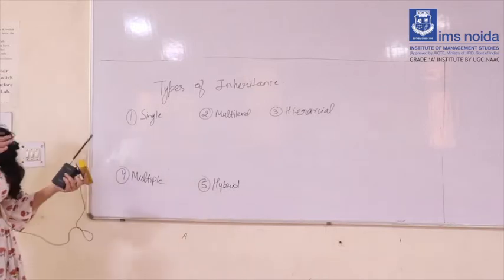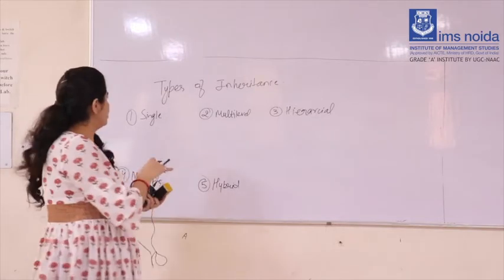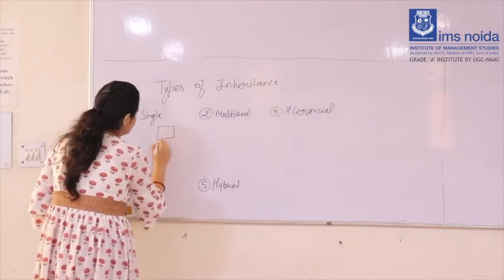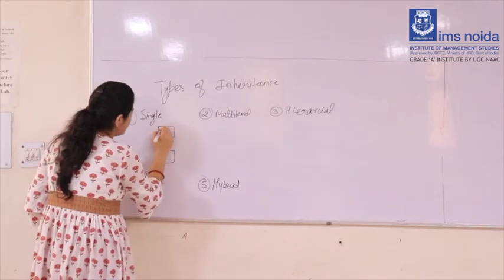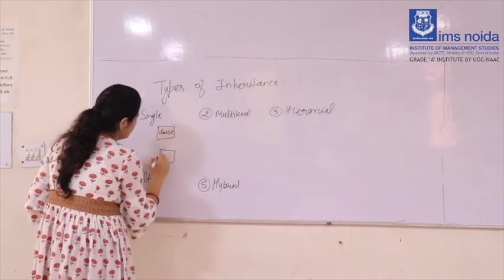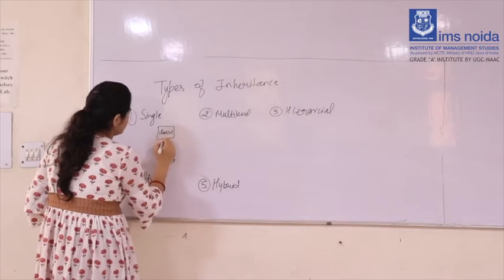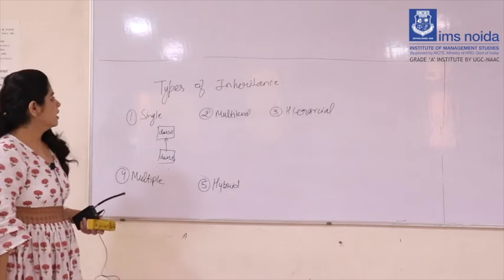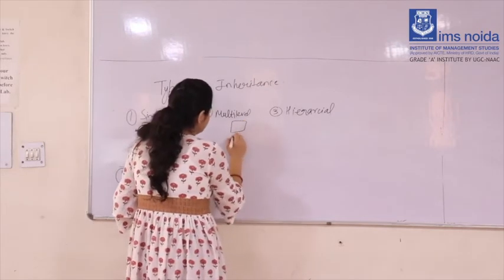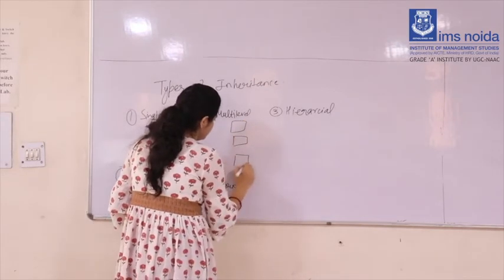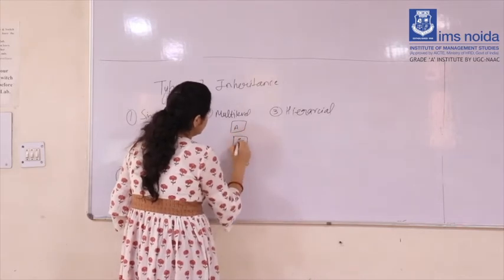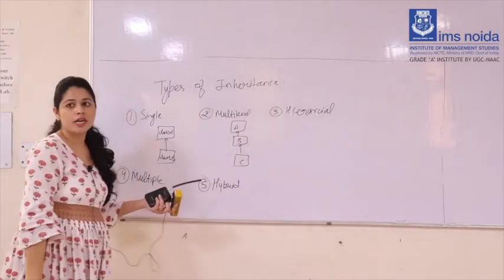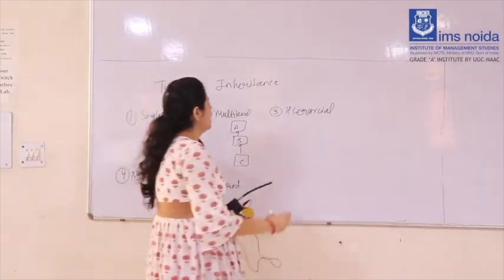Single inheritance is what we already saw in the example — there is one parent class A and one child class B. This is single-level inheritance. Multi-level inheritance involves more than two classes: class A, class B, class C — where each inherits from the previous one.